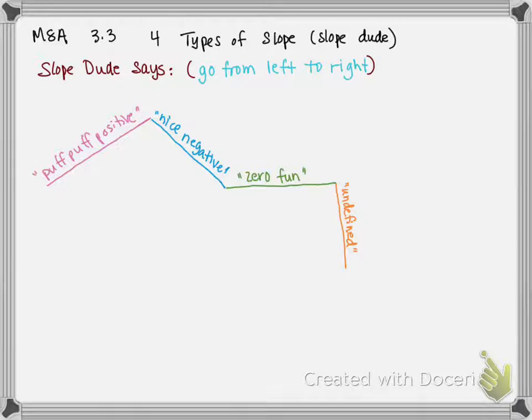When he's puff, puff, positive, you are seeing a line that goes from the bottom and it goes up towards the right. When you see a line that has a negative slope, you're going to be going high on the left to down low on the right. Zero fun, that guy right there, he is a horizontal line. And the equation would be y equals some number and the slope is equal to zero.